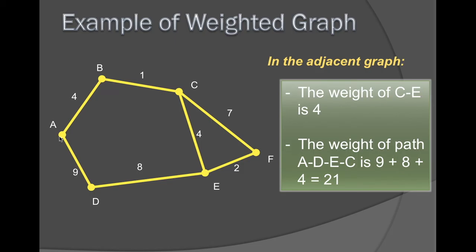The weight of segment CE is 4 because you see there's 4 here. The weight of A, D, E and C is adding all of their paths together. So if we start at A, D is 9, to E is 8, to C is 4. Adding them all together, 9 plus 8 plus 4 is 21. So the weight is 21.